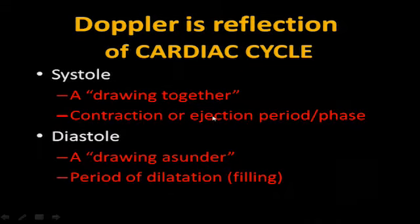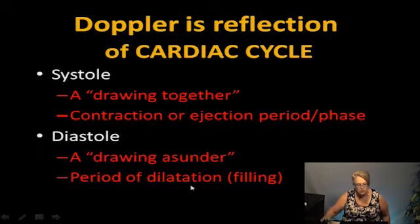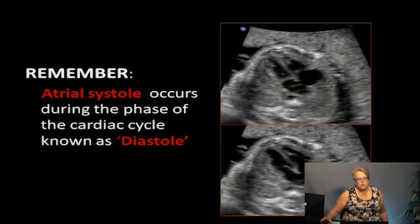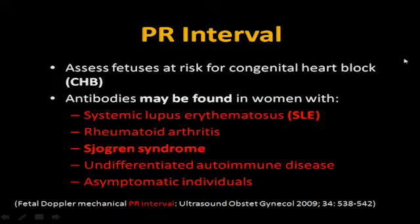When we talk about the cardiac cycle, we're talking about systole and diastole. Systole is the contraction or ejection period; diastole is the period of dilatation when the heart is filling. Contracting moves blood out; diastole is the filling cycle. We're talking about the ventricular phase. The PR interval helps assess fetuses at risk for congenital heart block — seen with antibodies in women with systemic lupus, rheumatoid arthritis, Sjogren's syndrome (SSA, SSB antibodies), and other autoimmune diseases.